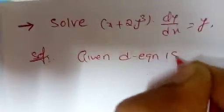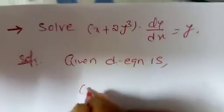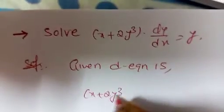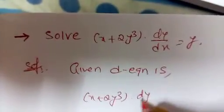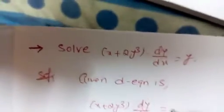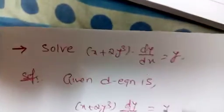Next problem to solve. Given differential equation is: (x + 2y³) · (dy/dx) = y.